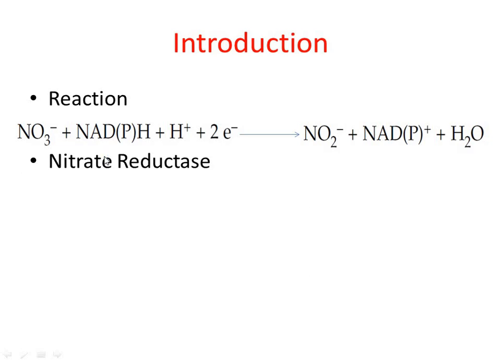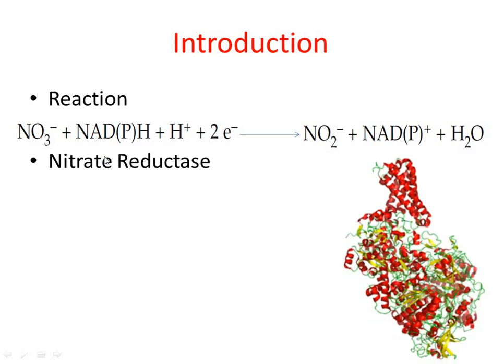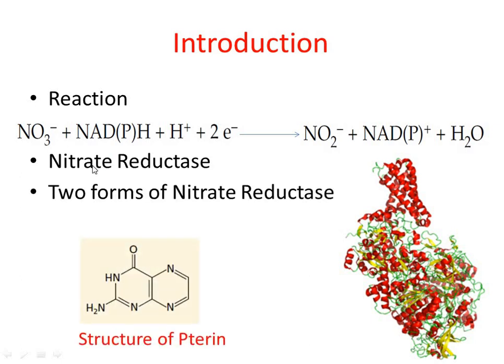The nitrate reductase of higher plants is composed of two identical subunits, each containing three prosthetic groups: FAD, heme, and a molybdenum complex bound to an organic molecule called pterin. Nitrate reductase is the main molybdenum-containing protein in vegetative tissue, and one symptom of molybdenum deficiency is the accumulation of nitrate resulting from diminished nitrate reductase activity.